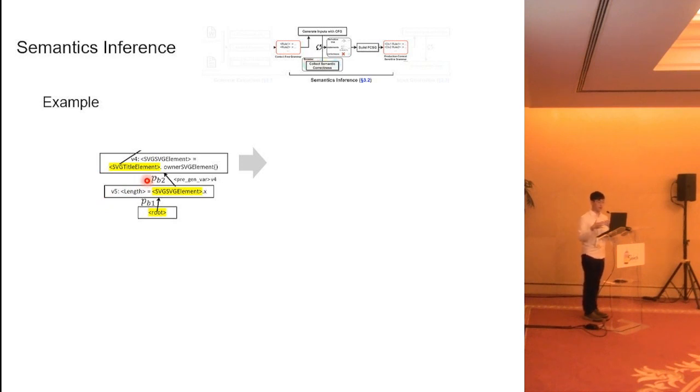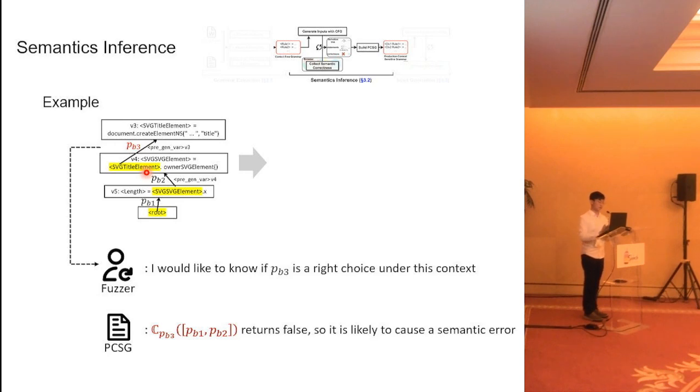As we said before, a fuzzer will randomly select a production rule to expand this non-terminal symbol. So suppose the production rule selected by our fuzzer is called Pb3. Then our fuzzer would like to know if this production rule is the right choice under this context. Our PCSG will tell the fuzzer, I have checked the context-checking function for this production rule Pb3. And under this very specific context,